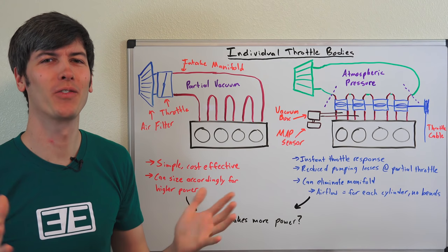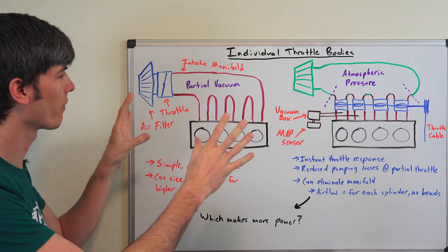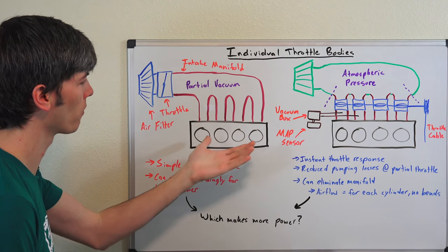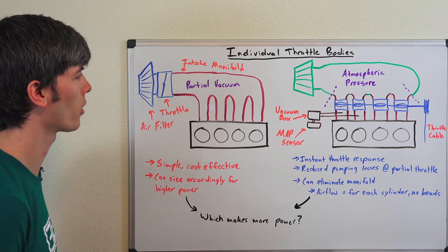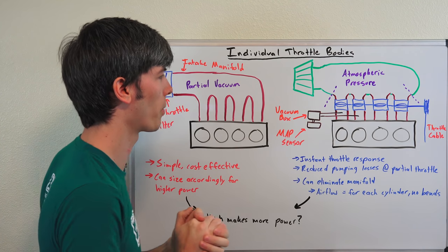Hello everyone and welcome. In this video we're going to be talking about how individual throttle bodies work. I've got two drawings here. On the left we have a four-cylinder engine with a single throttle body, and on the right we have a four-cylinder engine with individual throttle bodies.